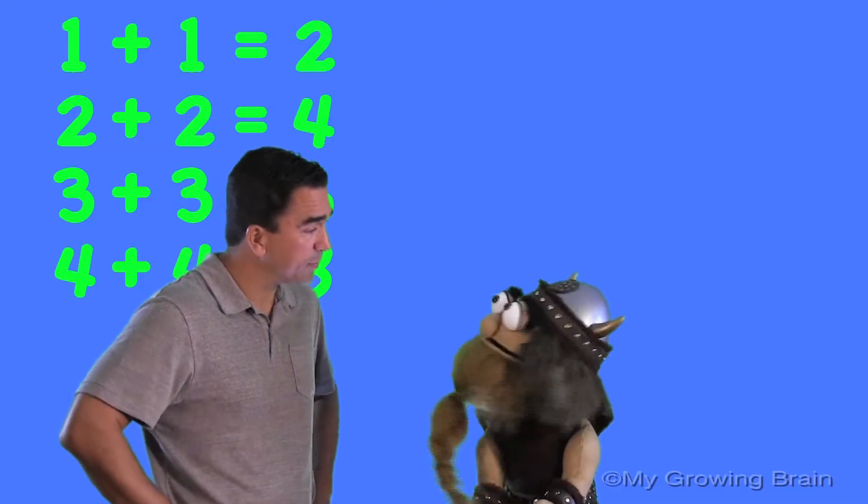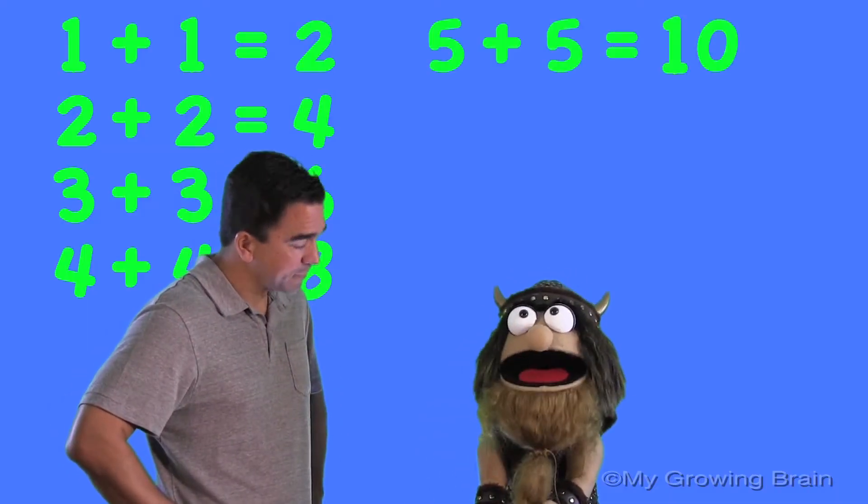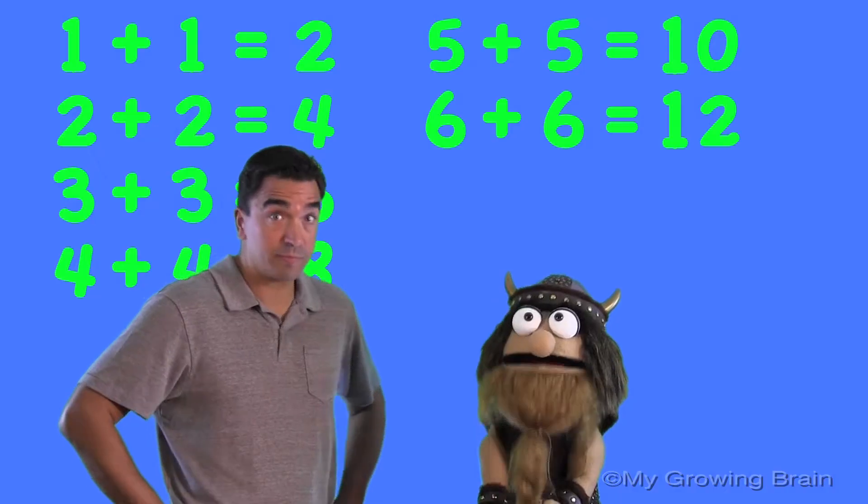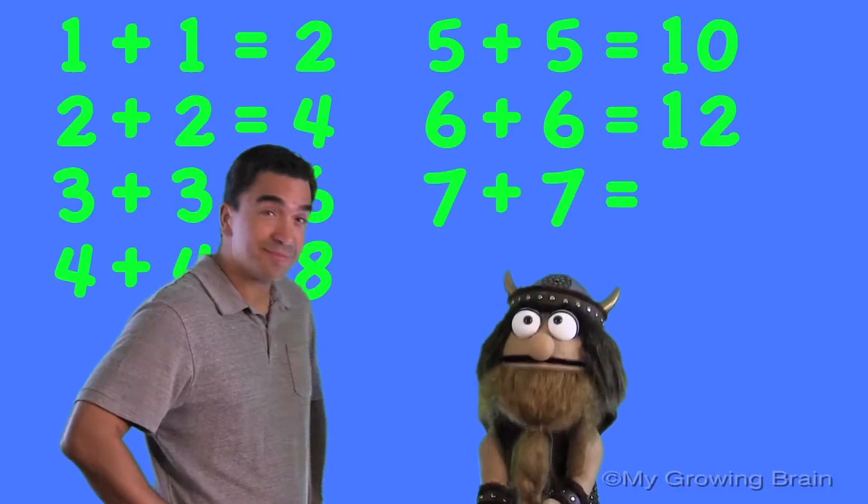Keep going. Let me do some more. Oh, okay. 5 plus 5 is 10. 6 plus 6 is 12. 7 plus 7 is 14.